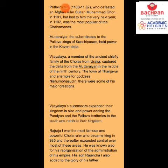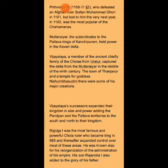Next are the Muriars, who were subordinates to the Pallava kings of Kanchipuram and held power in the Kaveri Delta. Vijayalaya, a member of the ancient chiefly family of the Cholas from Uriyur, captured the Delta from the Muriars in the middle of the 9th century.